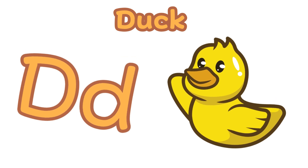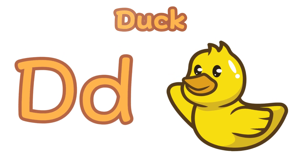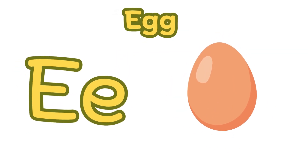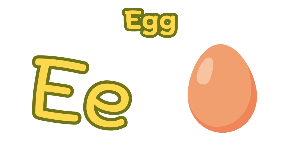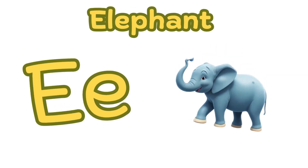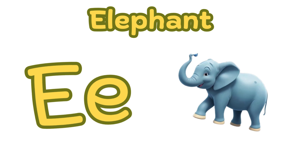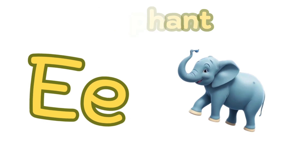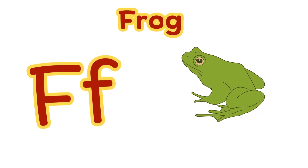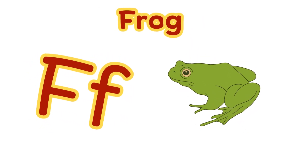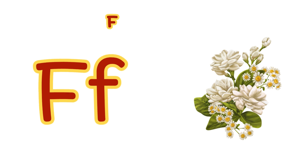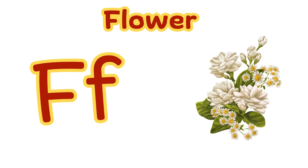E is for elephant. E, e, e — elephant. F is for frog. F, f, f — frog. F is for flower. F, f, f — flower.